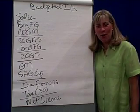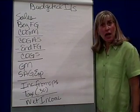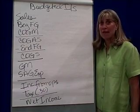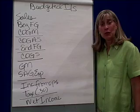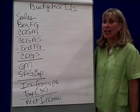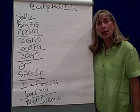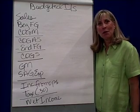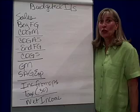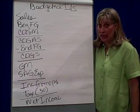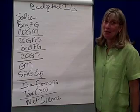Managerial accounting, the budgeting process. We've been doing a lot of operating budgets and financial budgets. Here's the last one we're going to do in this problem — the budgeted income statement. We'd also call this the pro forma income statement because even before the year begins, I'm going to know what my net income is if all goes according to plan, according to the budget.